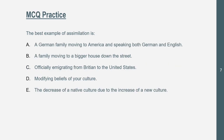Multiple choice question practice. The best example of assimilation is what? The correct answer is E: the decrease of native culture due to the increase of a new culture. These people are taking that new culture and adapting their standards or beliefs to it while removing their native culture — or this native culture is dying because of this new culture.